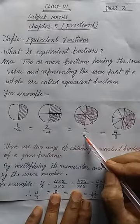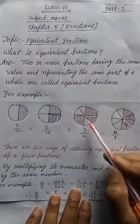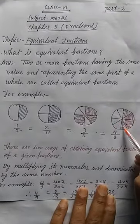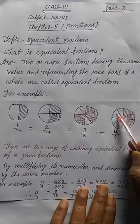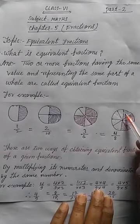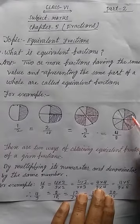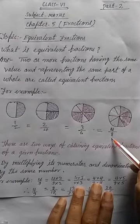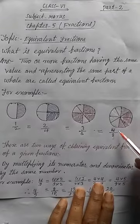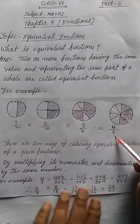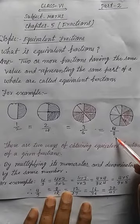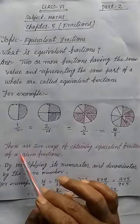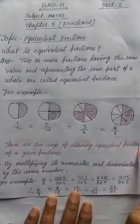Similarly, here there are 8 parts — 1, 2, 3, 4, 5, 6, 7, 8 — and 4 parts are shaded. So we can write 4/8. We can say 4/8 is shaded and 4/8 is not shaded. Now, we can find equivalent fractions by 2 ways. There are 2 methods of obtaining the equivalent fraction.